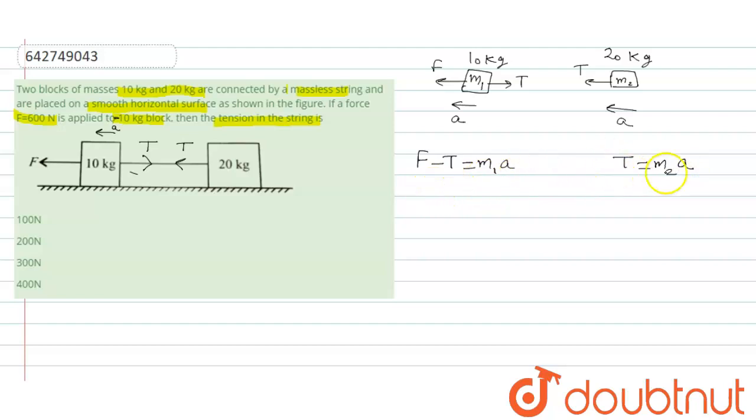We will put this T in this. So it becomes F minus M2a equal to M1a. So it becomes F is equal to M1 plus M2 into A.